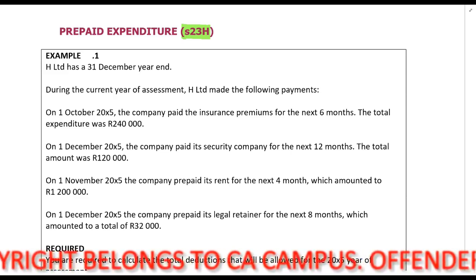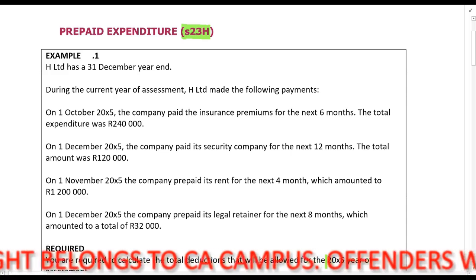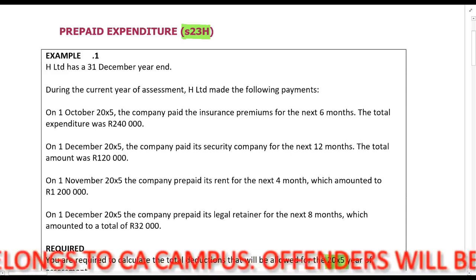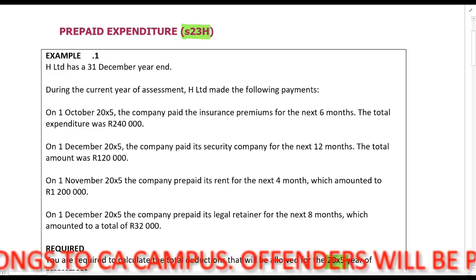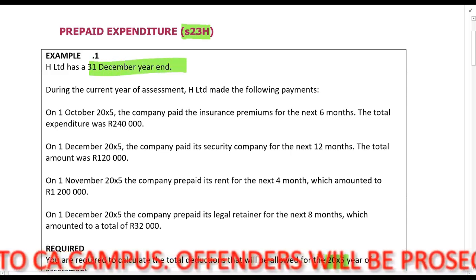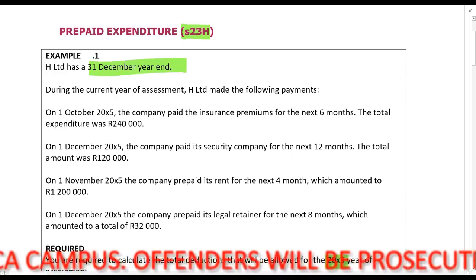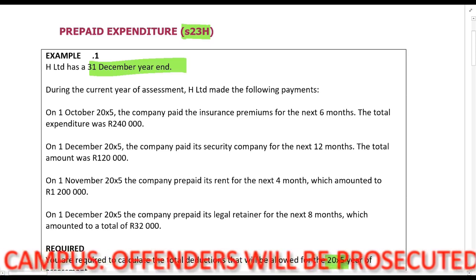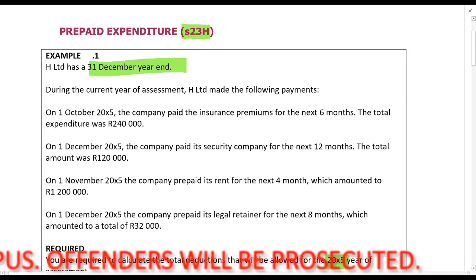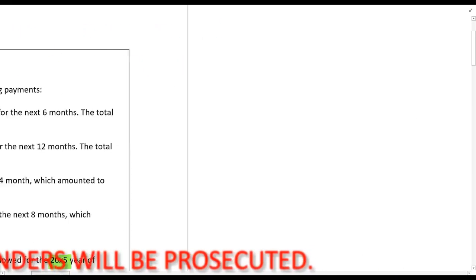Let's look at this question: what will be the deductions allowed for 20X5? This company has a 31 December year end. On the 1st of October 20X5 the company paid the insurance premiums for the next six months, and the total expenditure was R240,000.